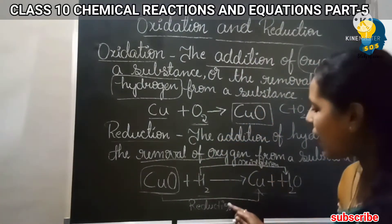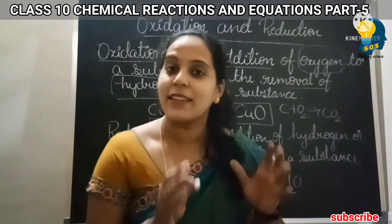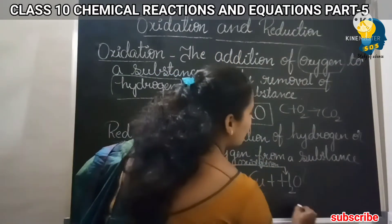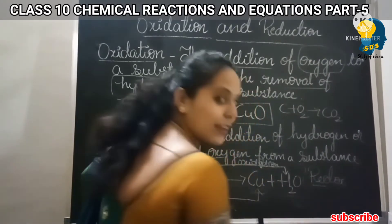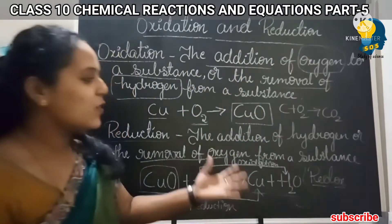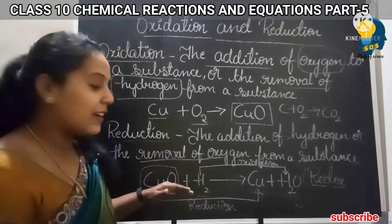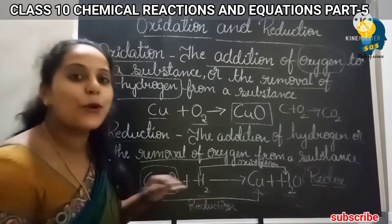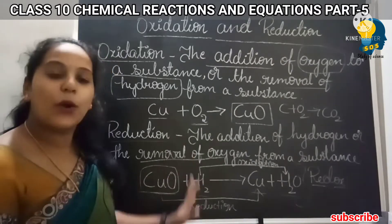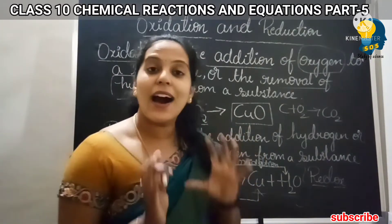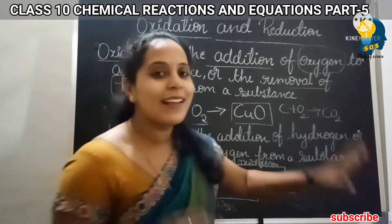Both oxidation and reduction are taking place in this reaction. If both oxidation and reduction take place in a reaction, then we will call such reactions redox reactions. 'Red' stands for reduction and 'ox' stands for oxidation, so it is called a redox reaction. If a reaction contains both oxidation and reduction processes, we call it a redox reaction.